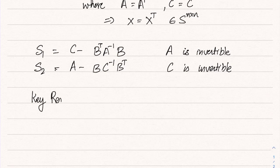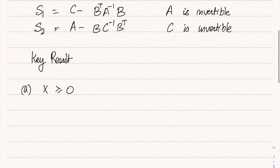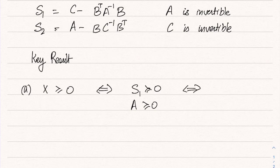And the key result that is very useful in this context is that X is positive semi-definite if and only if S1 is positive semi-definite and A is positive semi-definite, which is equivalent to saying that S2 is positive semi-definite and C is positive semi-definite. So as long as all the things are well defined, these three statements are exactly equivalent.